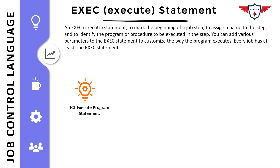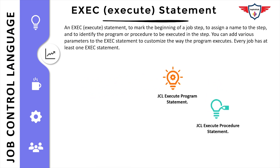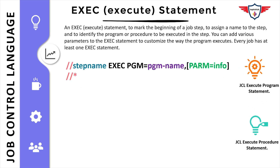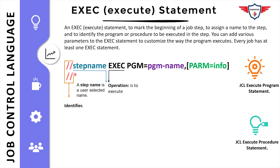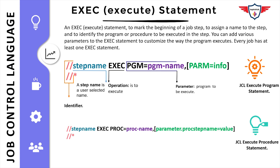The execute statement has two variants: one to execute a program and one to execute a JCL procedure. In the syntax, the first two columns are reserved for the identifier, followed by a user-selected step name, then the EXEC keyword. If executing a COBOL program, you specify PGM= followed by the program name. If executing a JCL proc, you use the proc name in place of PGM= followed by the proc name.